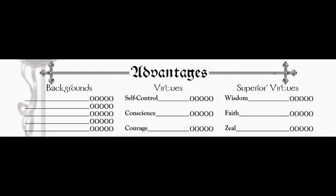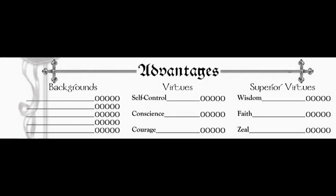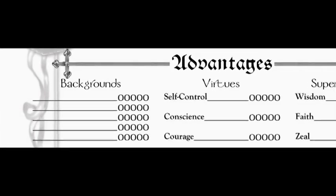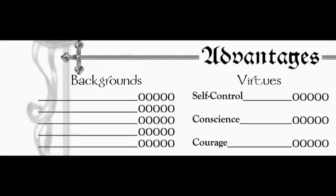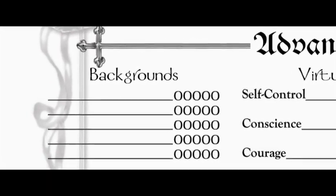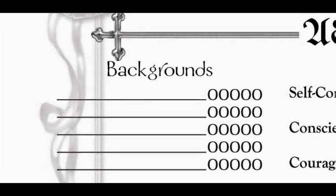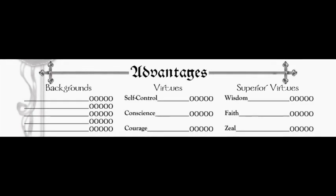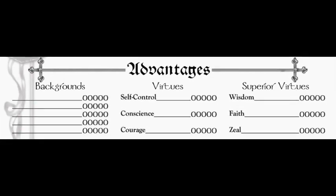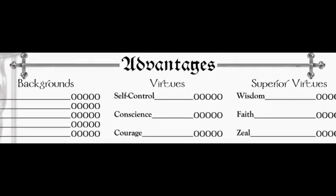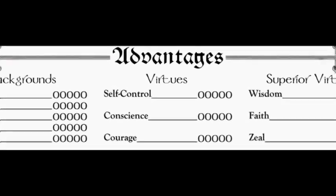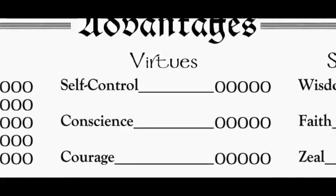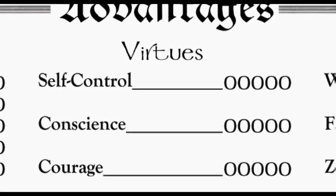Next we go into advantages. First, backgrounds — these work exactly as in all White Wolf games, just with a couple of new ones given inquisitor-themed names. They have holy relics just as werewolves have fetishes, and a flock of common people helping them just as vampires have retainers or ghouls. Then we have virtues — self-control, conscience, and courage — which work in the exact same way as in Vampire. You roll them when situations call for it, or they serve as guideposts for your character's moral standing. It's fairly rare to actually roll them.